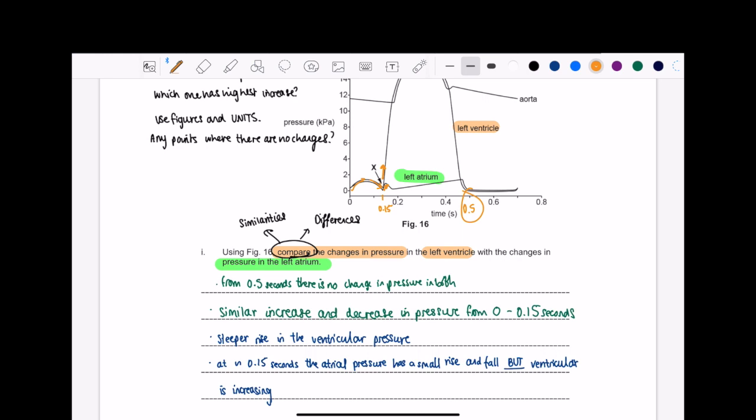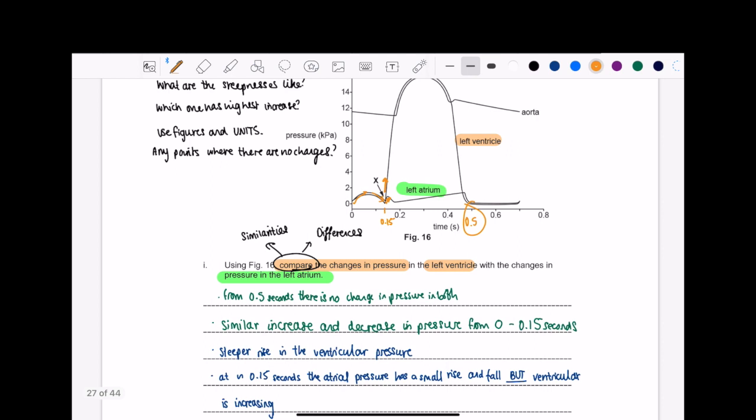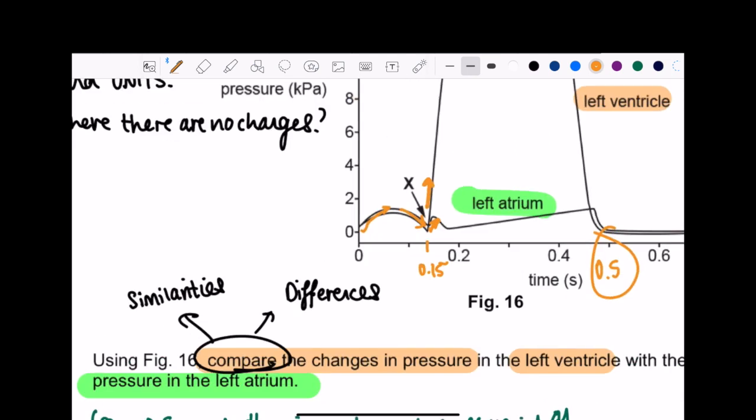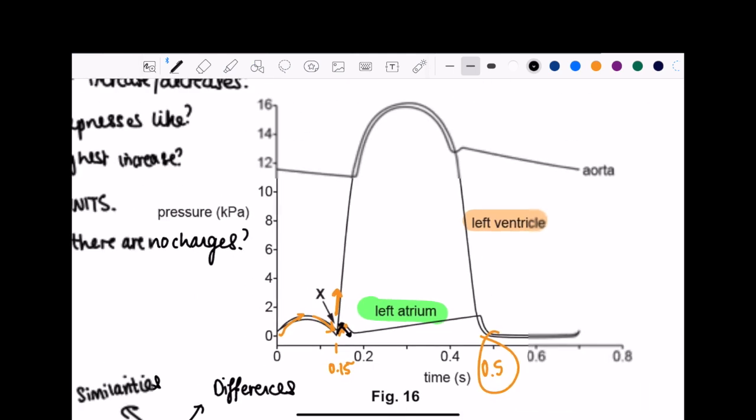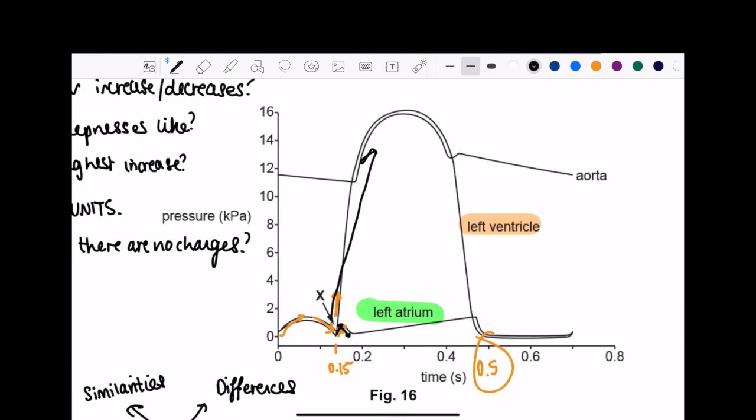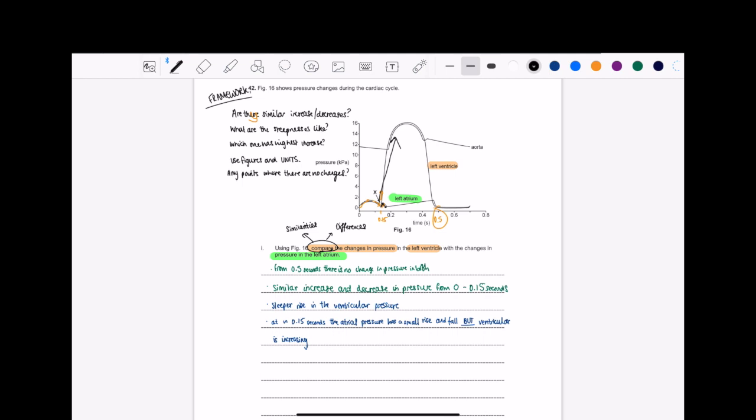Next one is at approximately 0.15 seconds, the atrial pressure has a small rise and fall, but ventricular is increasing. What I mean by that is, do you notice how it's like increasing but then it decreases, whereas at that same point, look, it's just increasing.